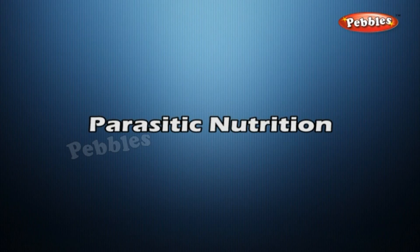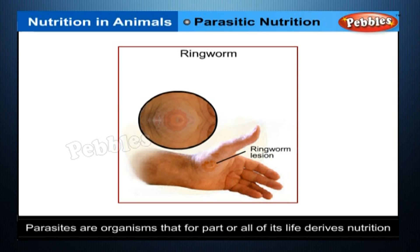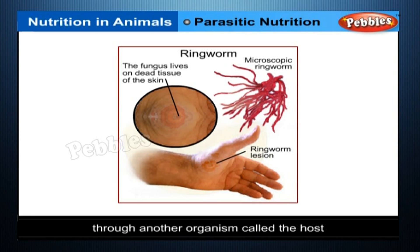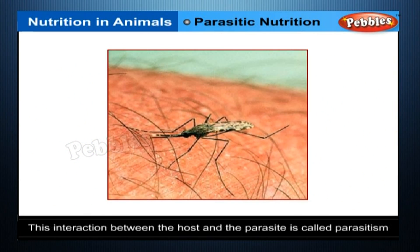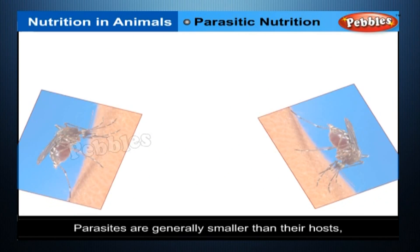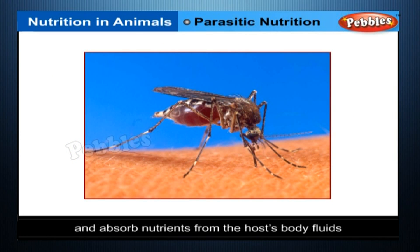Parasitic Nutrition. Parasites are organisms that for part or all of their life derive nutrition through other organisms called the host. This interaction between the host and the parasite is called parasitism. Parasites are generally smaller than their hosts and absorb nutrients from the host's body fluids. An example is the mosquito.